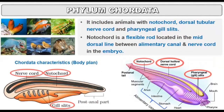Phylum Chordata includes animals with notochord, dorsal tubular nerve cord, and pharyngeal gill slits. In Phylum Chordata, three things are present: the notochord, the tubular nerve cord, and pharyngeal gill slits. We saw that Hemichordata also had pharyngeal gill slits, which is why it was called Hemichordata — because chordate-like features were present. But in Phylum Chordata, we get all three things.